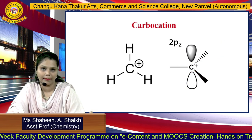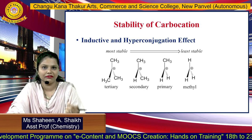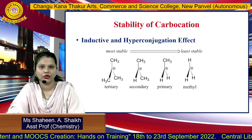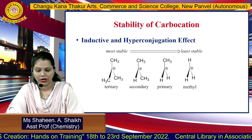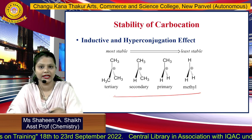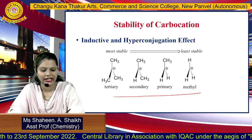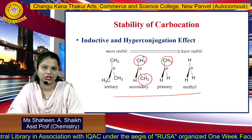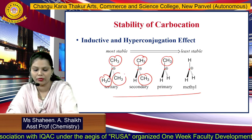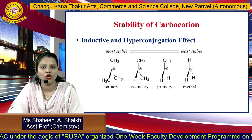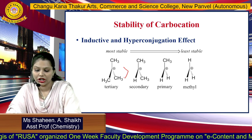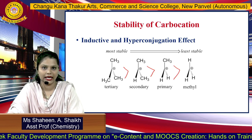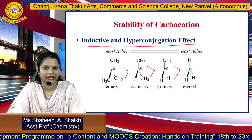The next part is the stability of carbocation. There are different factors by which we can learn the stability of carbocation: inductive effect, hyperconjugation effect, resonance effect, and mesomeric effect. These are the different types of carbocation: tertiary, secondary, primary, and methyl. If the carbocation is attached with one R group, it is primary; with two R groups, it is secondary; with three R groups, it is tertiary. Among them, the most stable carbocation is tertiary. Tertiary is more stable than secondary, secondary more stable than primary, and primary more stable than methyl carbocation.